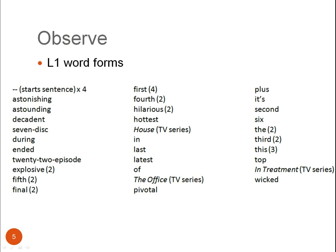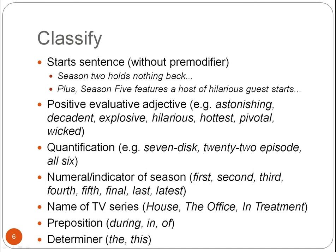The next step is to group these in some way. Can we classify these individual word forms into groups that share common features? Well, I believe we can. Looking just at the L1 position, we can see that the word 'season' either starts a sentence, co-occurs with a positive evaluative adjective such as 'astonishing', or co-occurs with quantifications such as '7-disc', or co-occurs with a numeral or some other indicator of which season the DVD is concerned with, like 'first' or 'final', or co-occurs with the name of the TV series, or a preposition or determiner.